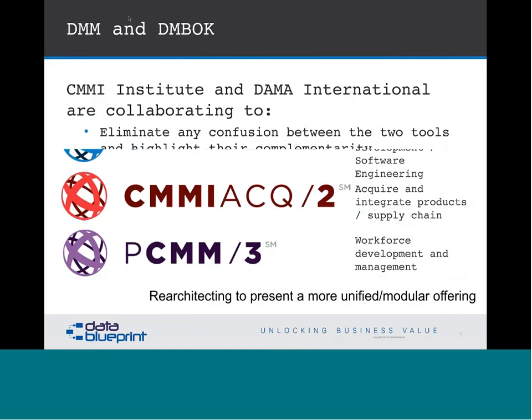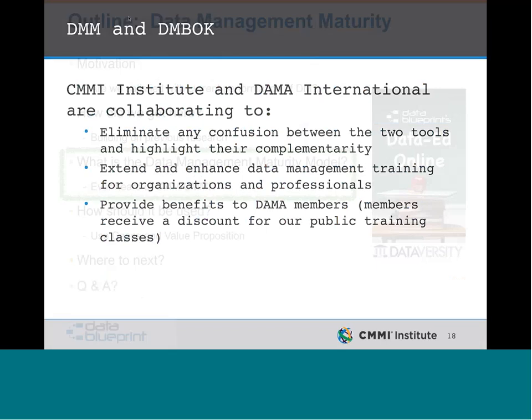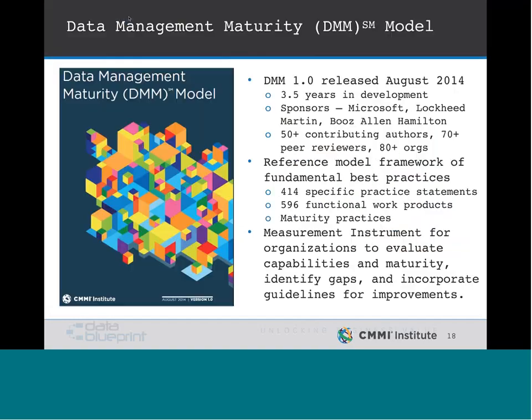What we have tried to do with the Data Management Association, doing workshops and presentations for different data chapters, is to eliminate any confusion between the two tools and highlight their complementarity. The DMM is what you want to use if you want quick, precise answers of exactly how your organization is doing. And the DMBOK is a fabulous reference resource for very useful technical implementation and practical suggestions. The DMM has 414 practice statements and 596 example functional work products.